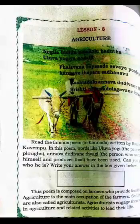Rich farmers use irrigated agriculture. With the help of a pump set, they grow crops using water from bore wells or canals. Water for agricultural land comes from ponds, canals, wells, and bore wells — these are called sources of irrigation. There are two types of irrigation methods: drip irrigation and spray irrigation. In drip irrigation, water is supplied to the roots of crops drop by drop. In spray irrigation, water is sprayed over the crops uniformly, like rainfall.